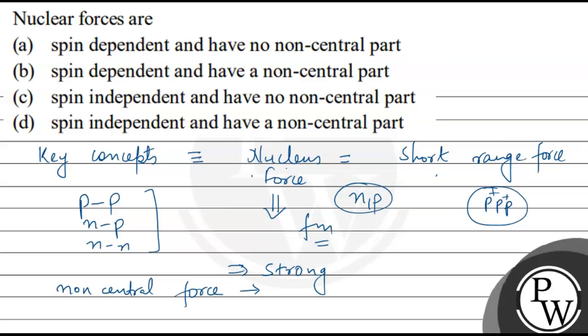The distance between the nucleons depends on spin. This means spin-dependent force. We know it is a spin-dependent force. The proton and neutron are fermions, which are spin half particles.